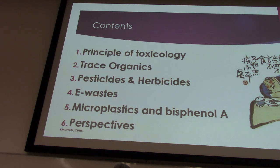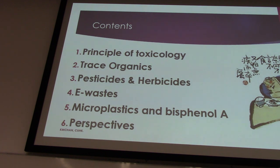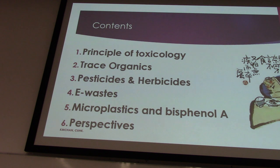Because the dose makes the poison, the kind of chemicals we look at are usually in traces. This is a very low concentration — as low as ppm (parts per million), ppb (parts per billion), and then ppt (parts per trillion).